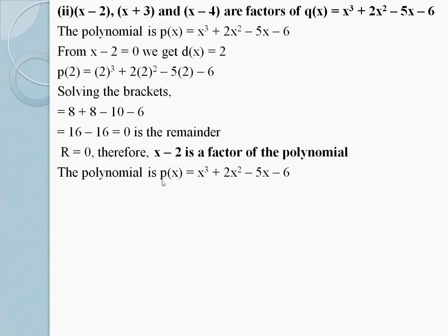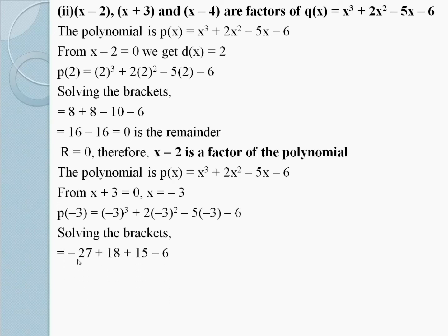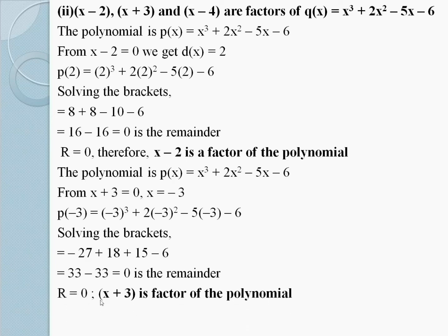The polynomial is P(x) = x³ + 2x² - 5x - 6. From x + 3 = 0, x = -3. Replacing the value: P(-3) = (-3)³ + 2(-3)² - 5(-3) - 6. Solving: -27 + 18 + 15 - 6 = 33 - 33 = 0. Since r = 0, therefore x + 3 is a factor of the polynomial.